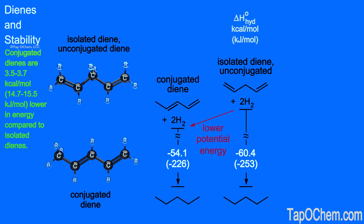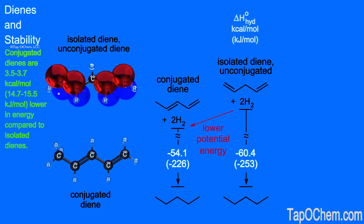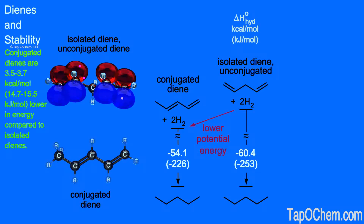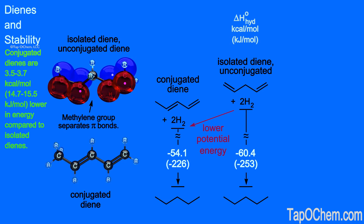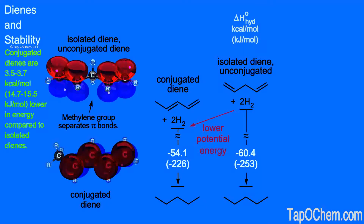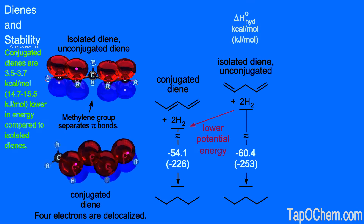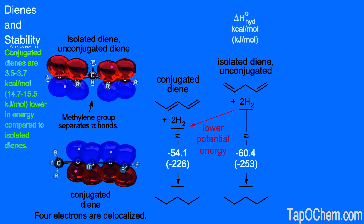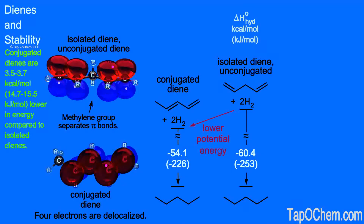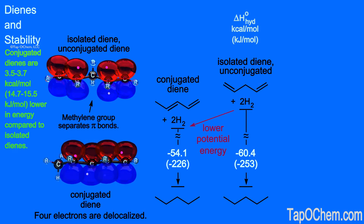Now that conjugated dienes are established as more stable than isolated dienes, the question is why. Let's place p orbitals of the pi bonds along with the electrons of the isolated diene. The orbitals of the pi electrons do not interact with each other because a methylene group separates the two pi bonds. In the conjugated diene, the four electrons can delocalize throughout the array of four 2p orbitals that make up the pi bonds. Delocalizing all four electrons through two pi bonds lowers the energy of the system, explaining the lower energy of conjugated dienes.